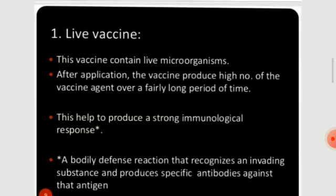The first type is live vaccines. These vaccines contain live microorganisms. After application, the vaccines produce a high number of vaccine agents over a fairly long period of time, and this helps to produce a strong immunological response — a bodily defense reaction that recognizes an invading substance and produces specific antibodies against that antigen.